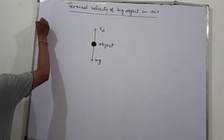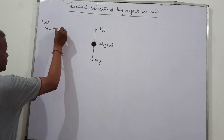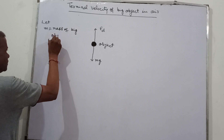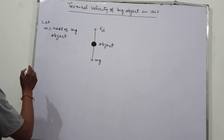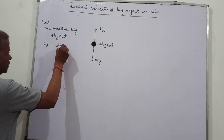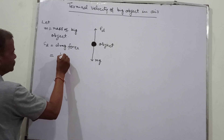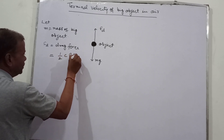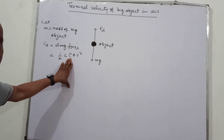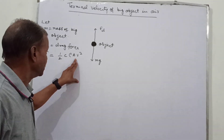Let M equal to the mass of the big object. The drag force Fd is equal to one-half C rho A times V squared. Here C is the drag coefficient, rho is the density of the air, A is the cross-sectional area of the object, and V is the velocity.